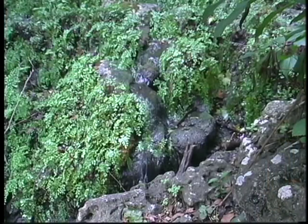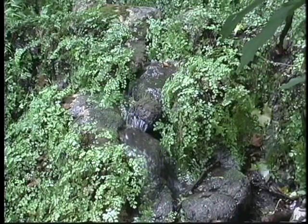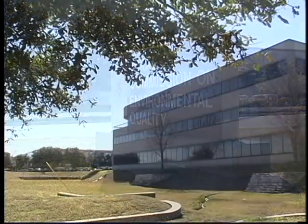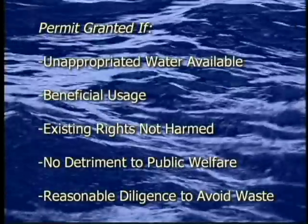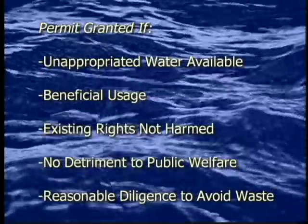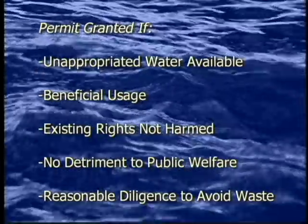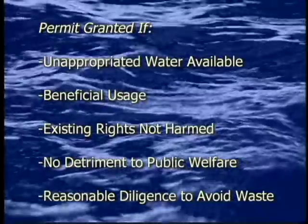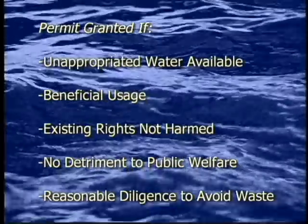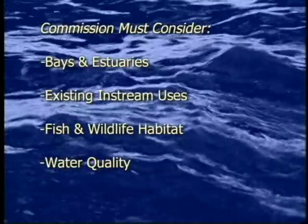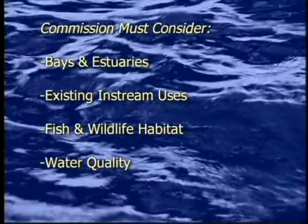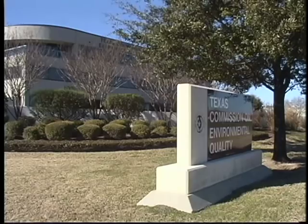Springs and spring water become state-owned when they flow to the surface and enter a natural river or stream. Anyone seeking to use state-owned surface water must get a permit from the Texas Commission on Environmental Quality. The Commission may grant a permit only if there is unappropriated water available in the river, the water will be beneficially used, existing water rights will not be harmed, the proposed use is not detrimental to the public welfare, and reasonable diligence will be used to avoid waste and conserve water. The Commission must also consider the effects of the permit on bays and estuaries, existing in-stream uses, fish and wildlife habitat, and water quality. If all of these conditions are satisfied, the Commission will issue a water use permit.